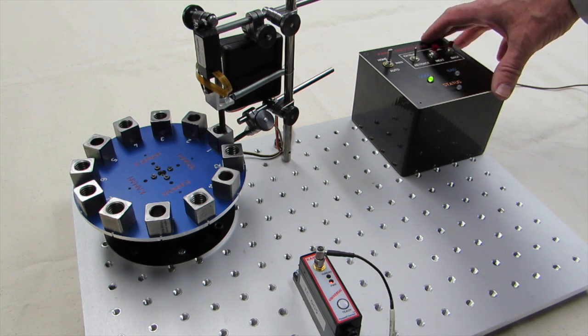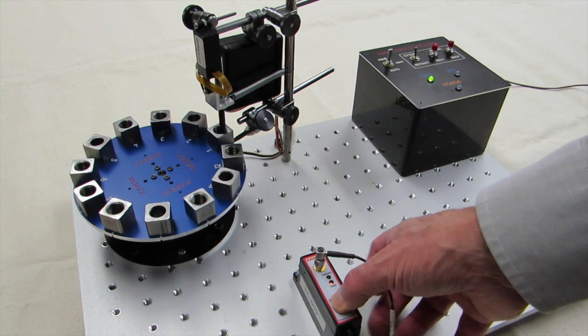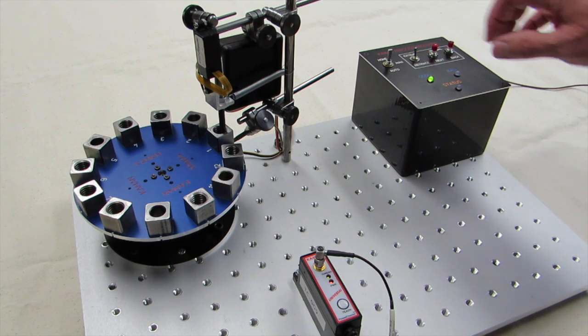You then insert the probe into a sample of a good threaded part. Press the Teach button again. You'll see the threaded light flashes at a different frequency.